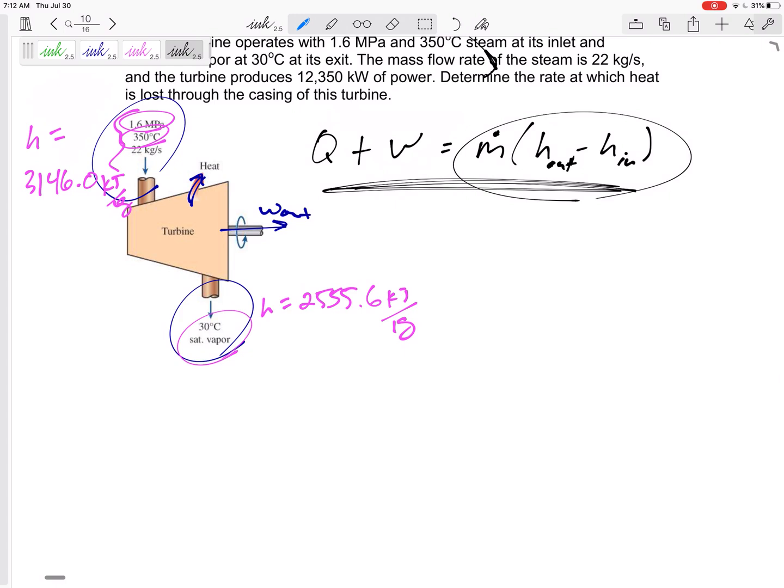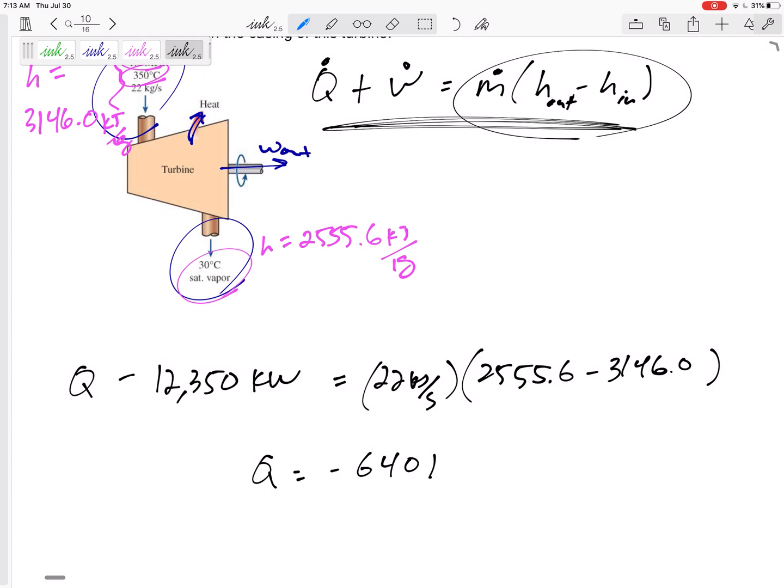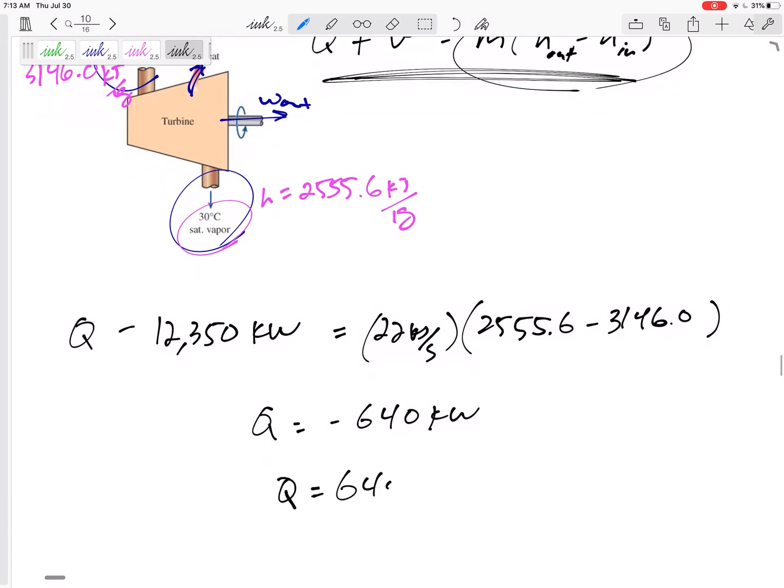So Q, do I have any Q? Yes I do have Q, that's what I'm trying to find. I've got Q out, so either you go ahead and know that it's, go ahead and give it a negative and you know that it's out, or you just say okay what is my Q? I'll calculate it. I've got work out of 12,350 kilowatts. So this is really Q dot W dot M dot. Q equals mass flow rate 22 kilograms per second, H out 2555.6 minus 3146.0 would give me a Q of negative 640 kilowatts. Yeah, makes sense that it was negative, it is going out 640 kilowatts.